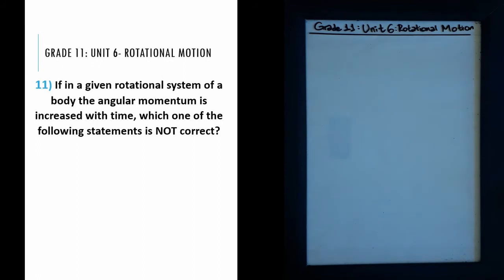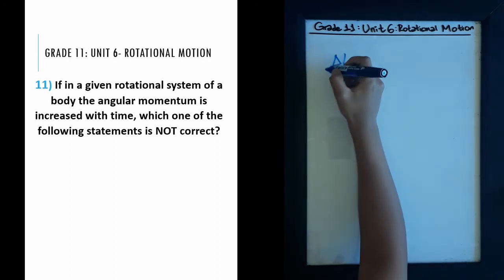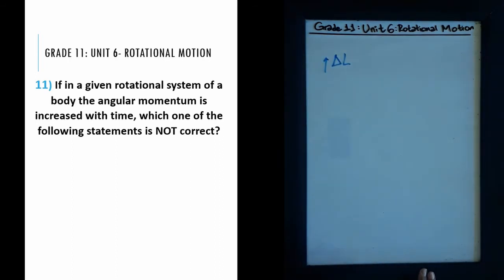Question 11: if in a given rotational system the angular momentum is increased with time, which of the following statements is not correct? An increase in angular momentum with time is actually the definition of angular impulse — it describes how the momentum changes with time. We represent angular momentum with L, and we have an increase in L as time goes by.